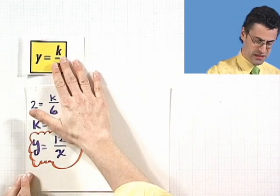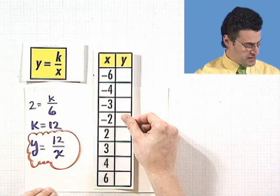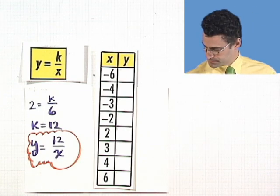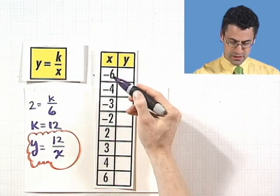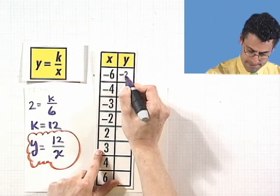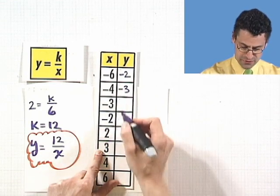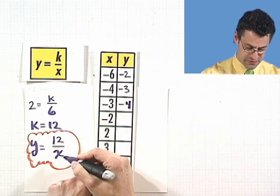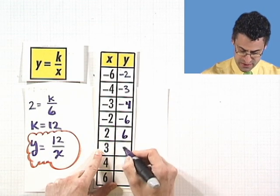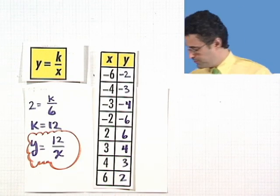How would you graph this equation? There are lots of ways — you can plot a table of points pretty fast. If you plug in negative 6 for x, you get 12 divided by negative 6, which is negative 2 for y. 12 divided by negative 4 is negative 3. 12 divided by negative 3 is negative 4. 12 divided by negative 2 is negative 6. And then we get the similar positive values. Now we can plot away.